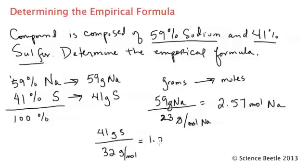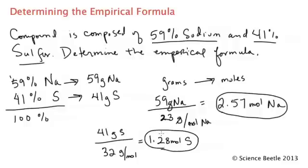At this point, I've got two different numbers: 2.57 and 1.28. I need to ask myself which mole number is the smaller amount—that's 1.28, associated with sulfur. So I divide both amounts by 1.28. 1.28 divided by 1.28 gives me 1, and 2.57 divided by 1.28 gives me 2.18.